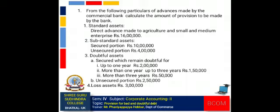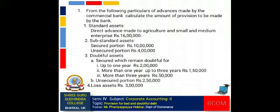From the following particulars of advances made by the commercial bank, calculate the amount of provision to be made by the bank. First, standard assets — direct advance made to agriculture and small and medium enterprise: Rs. 16 lakh. Second, substandard assets — secured portion: Rs. 10 lakh; unsecured portion: Rs. 4 lakh.